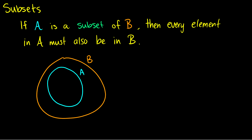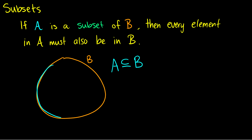In this video we're going to talk about subsets and power sets. If A is a subset of B, then every element in A must also be in B. Visually this means that A must be contained within B, and we write this as A is a subset of B. It can also be the case that A is exactly the same as B. The subset symbol with a line underneath means subset or equal, while a proper subset symbol without the bar means A must be strictly smaller than B.